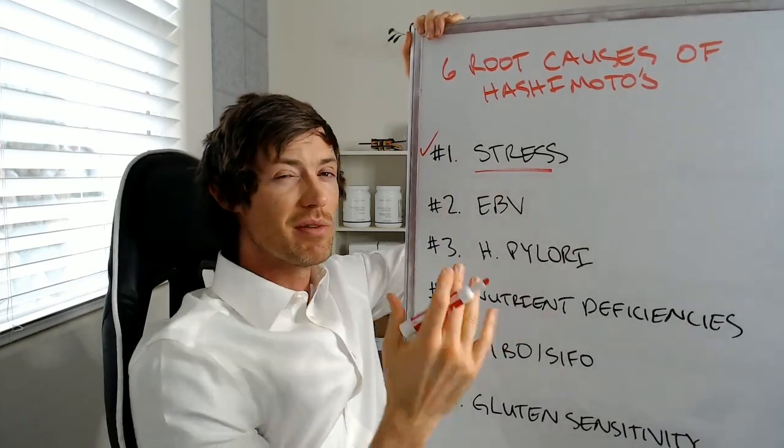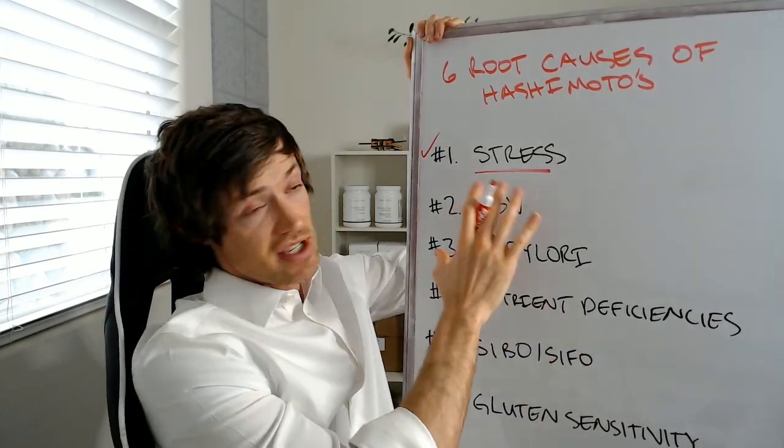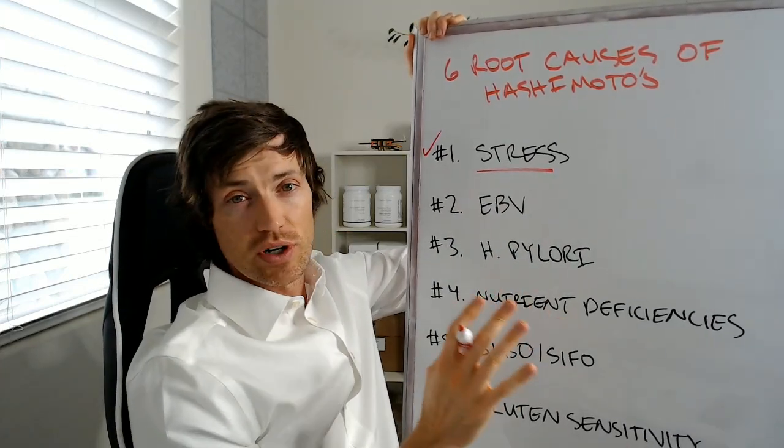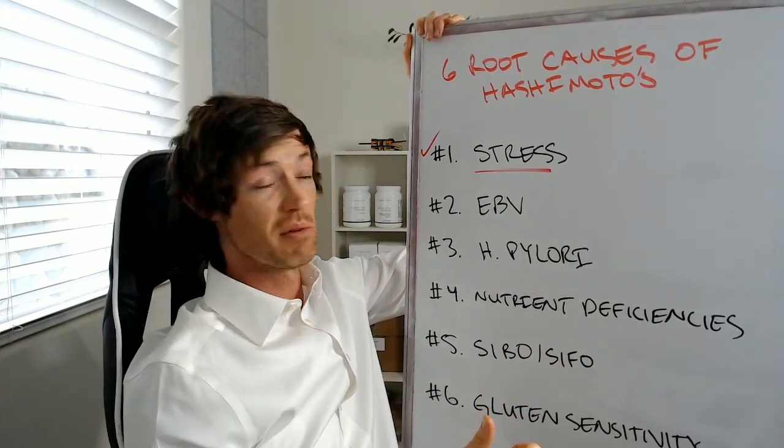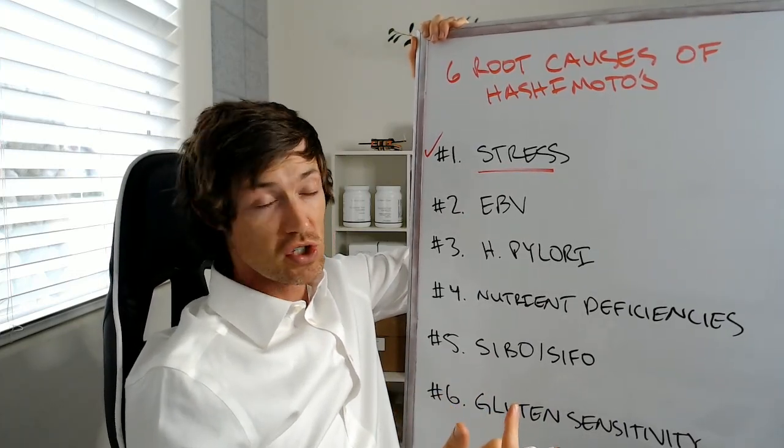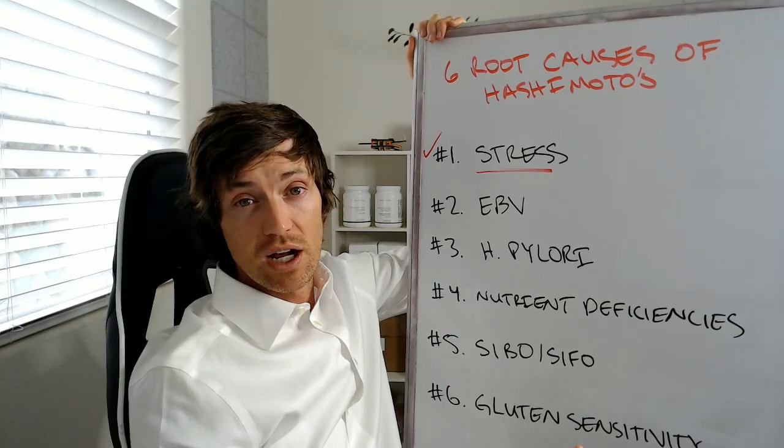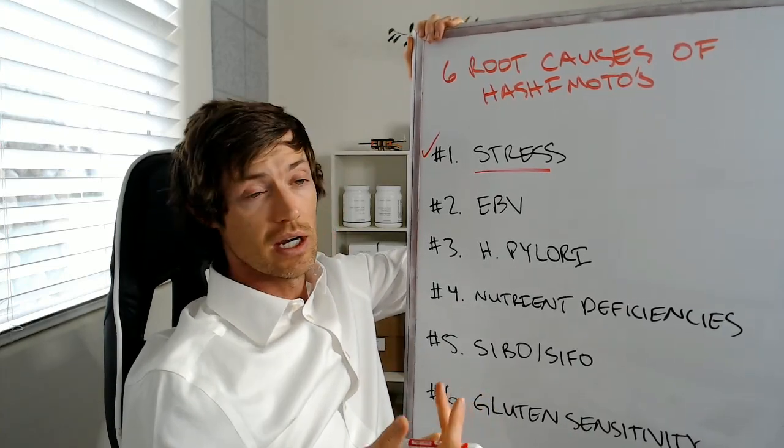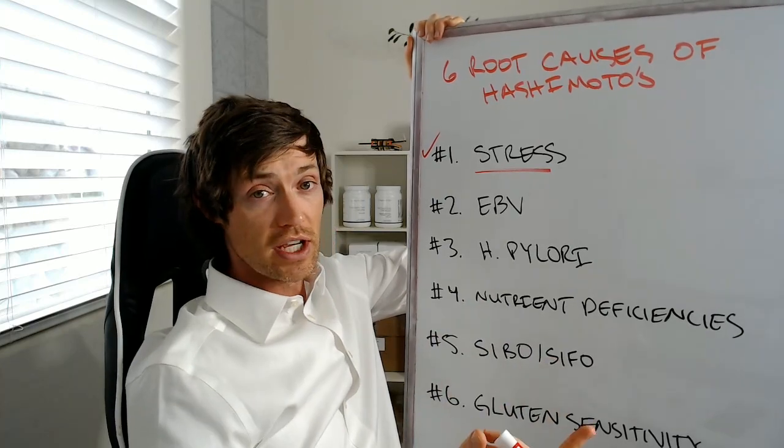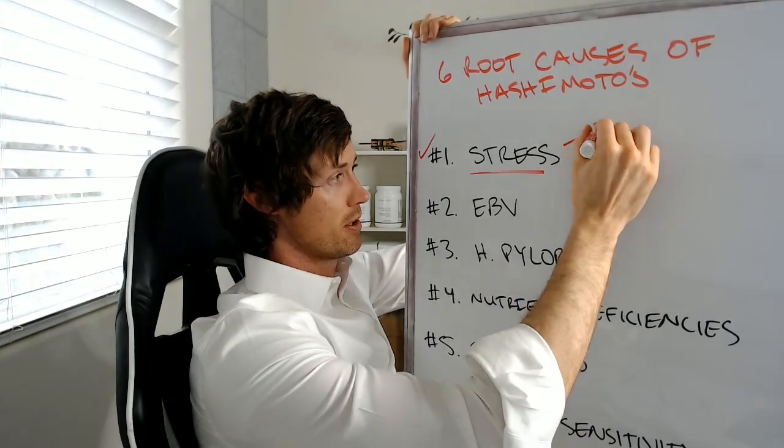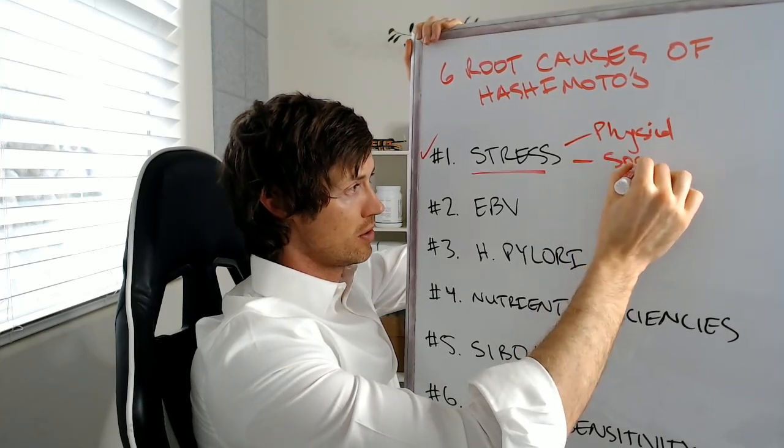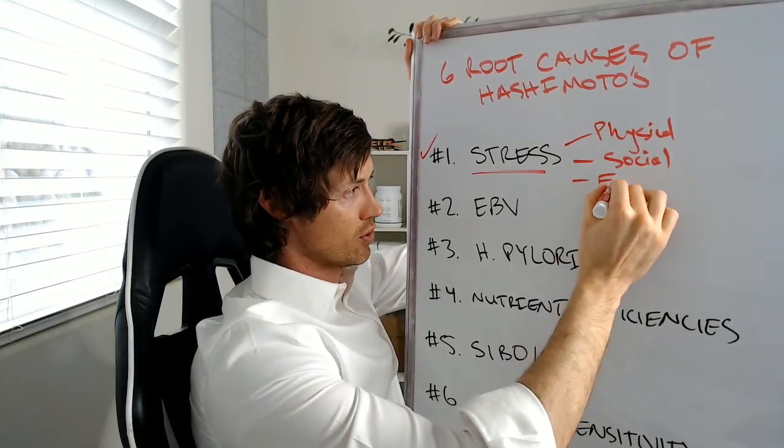So number one is stress. And really what I'm talking about here, and this is not specific intentionally by the way, but really what I'm talking about here is any sort of stress. So this could be physical stress. This could be something like getting in a car accident or being under a lot of physical stress from perhaps overtraining, doing things like overexercising, running triathlons, you name it, any sort of physical stress. Another thing could be social stress. So we got physical, we got social and we got emotional.